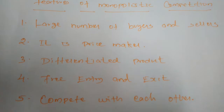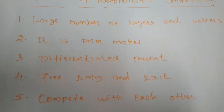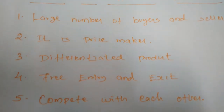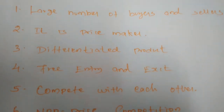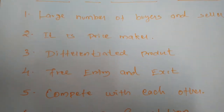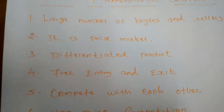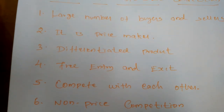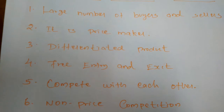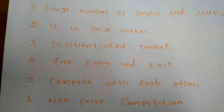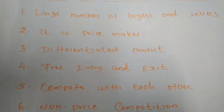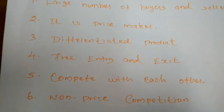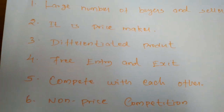Next, firms under monopolistic competition are price makers — they set their own prices like a monopoly. Firms in monopolistic competition also have the power to fix prices for their commodities. Next, firms produce differentiated products — all firms produce differentiated products. This is the key element of monopolistic competition; by changing the molecules or ingredients of the commodities, they bring products to the market.